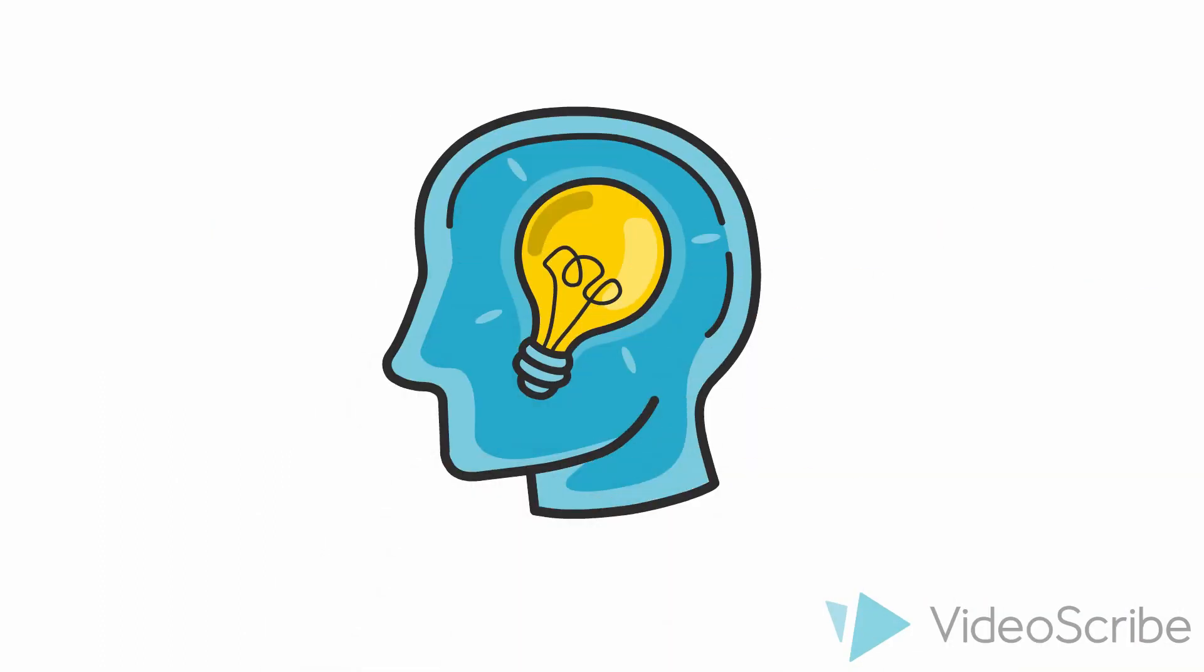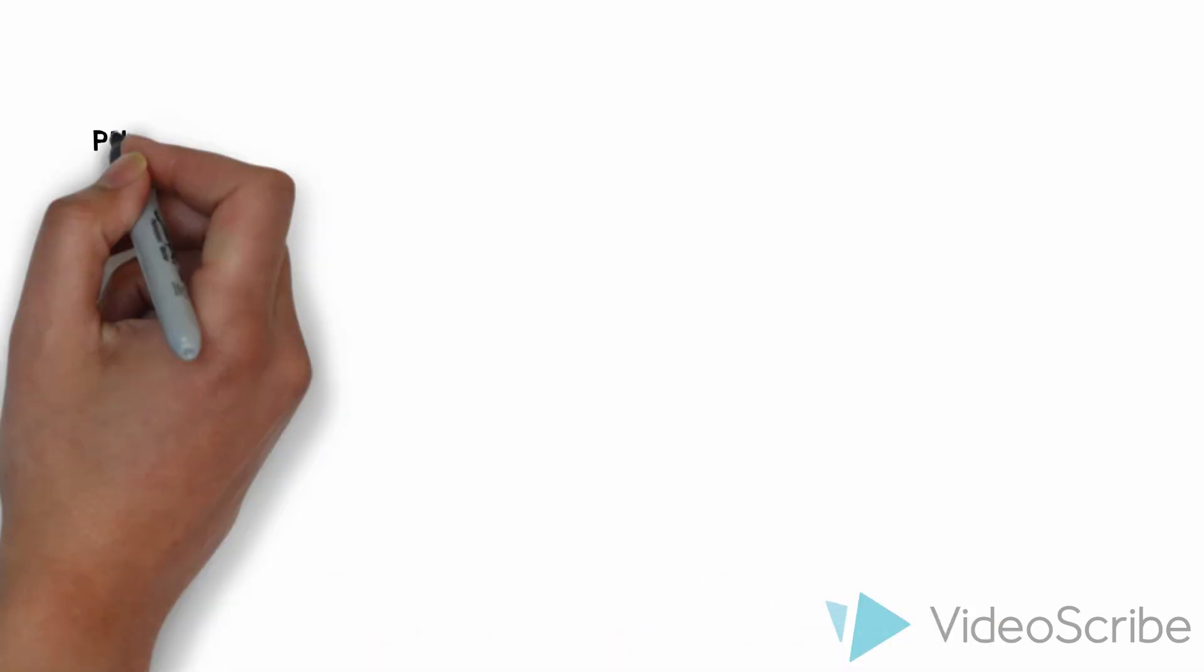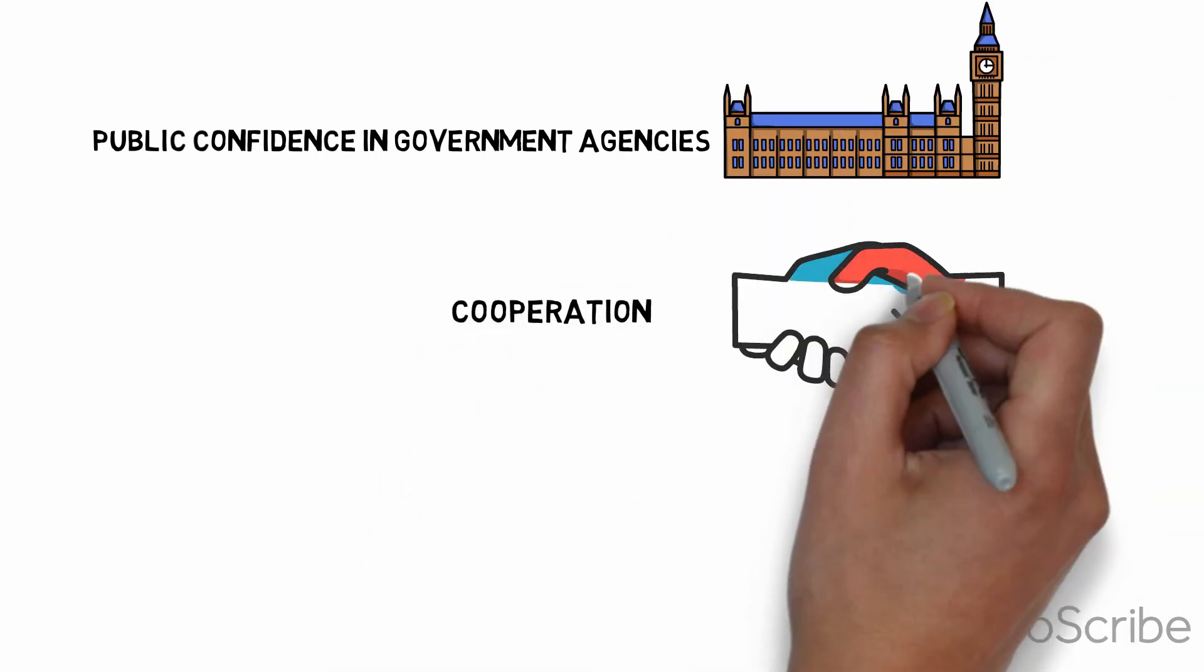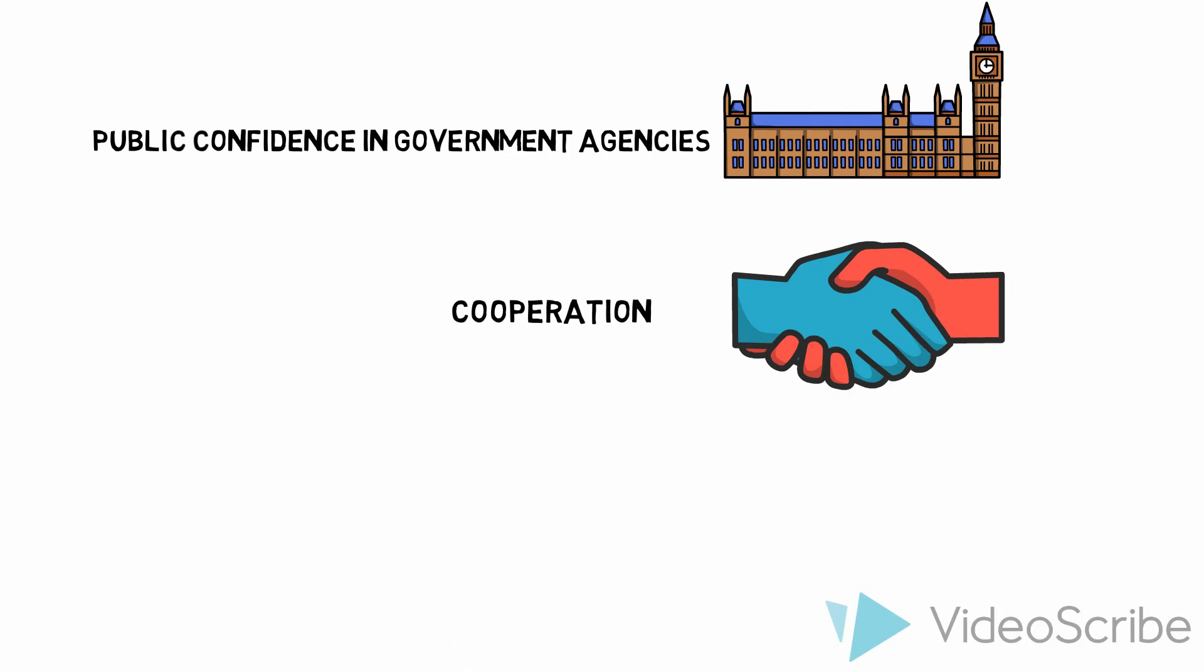In risk communication, trusting in the right sources is important for overcoming the dangers we're facing, and successful risk communication to the public relies heavily on public confidence in government agencies. Cooperation between individuals, organizations, and countries is necessary.